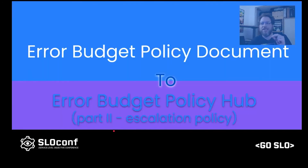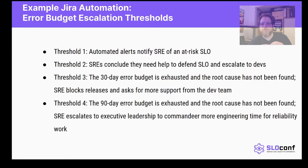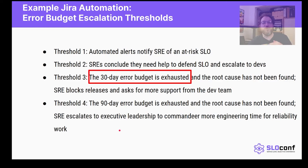Now we're going to take it a step further and embed the escalation policy into this document. Every error budget policy document has a threshold section that tells you what's supposed to happen when certain thresholds are exceeded. We're going to focus on threshold 3, which says: when a 30-day error budget is exhausted and the root cause has not been found, the SRE blocks releases and asks for more support from the dev team.